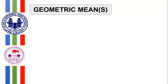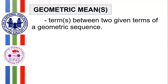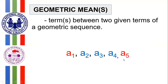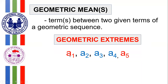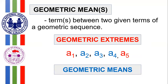Geometric means refer to the term or terms between the two given terms of a geometric sequence. For example, if we have a₁, a₂, a₃, a₄, a₅ forming a geometric sequence, then the first and last terms are referred to as the geometric extremes, and all the terms in between — namely a₂, a₃, a₄ — are the geometric means. Take note that the concept of geometric means is applicable if we have a finite geometric sequence, meaning there are a limited number of terms.